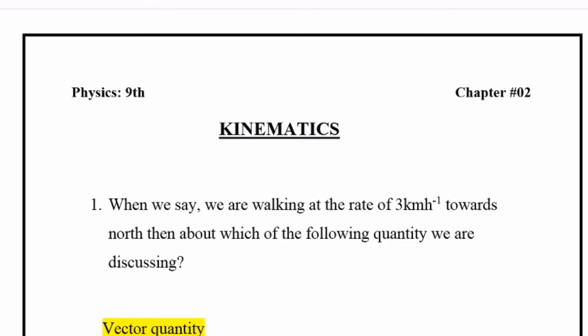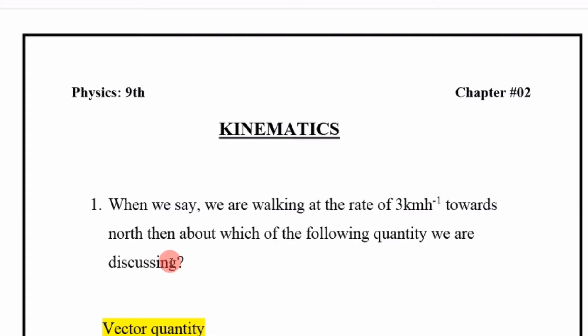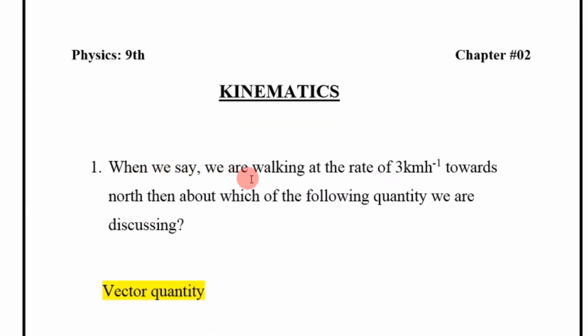Assalamu alaikum, hello friends and welcome to the next lecture of ninth class physics. Chapter number two: Kinematics. When we say we are walking at the rate of three kilometers per hour towards north, about which of the following quantity are we discussing? The answer is: vector quantity.